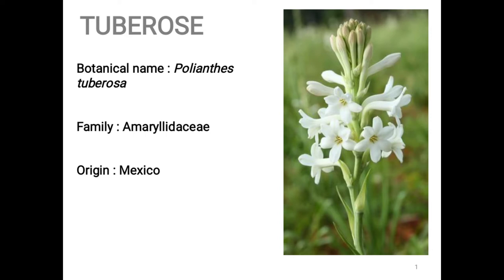The botanical name of tuberose is Polianthes tuberosa, family Amaryllidaceae, origin Mexico. You can see the image of tuberose on the screen.